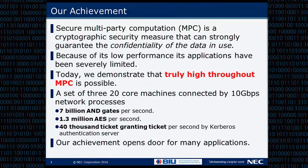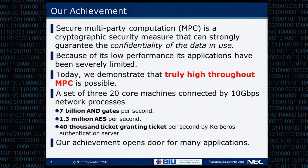This is what we think is a very big problem. However, today I want to demonstrate that we have truly high throughput MPC. A set of 320-core machines connected by a 10 Gbps network processes 7 billion AND gates per second. With this capability, we can compute 1.3 million AES per second, and demonstrate 40,000 granting tickets per second by a Kerberos authentication server.